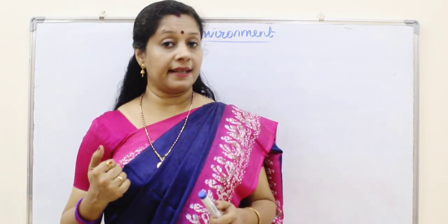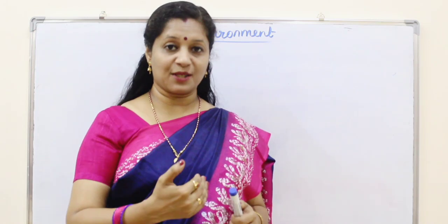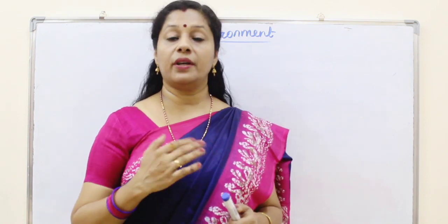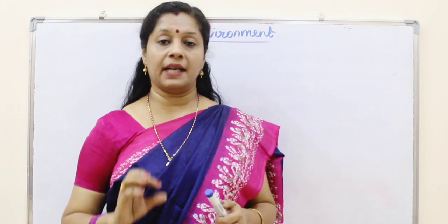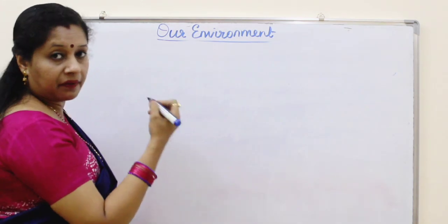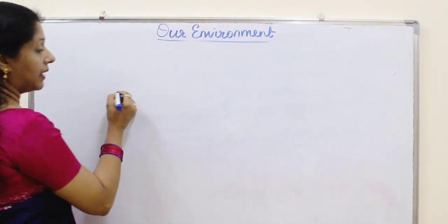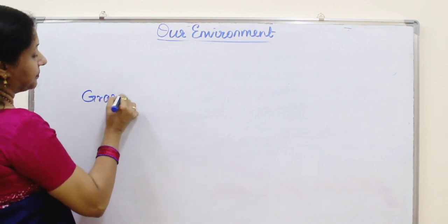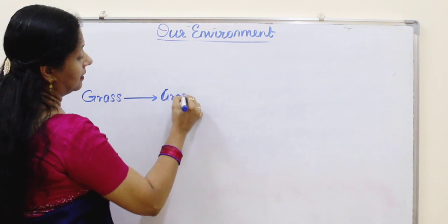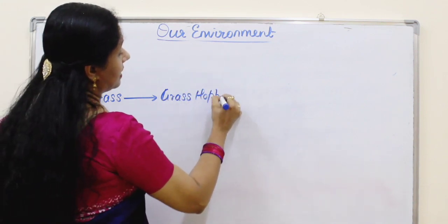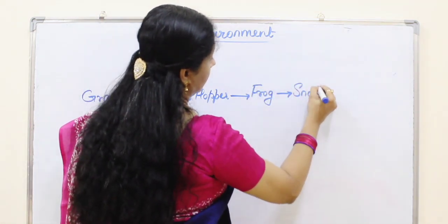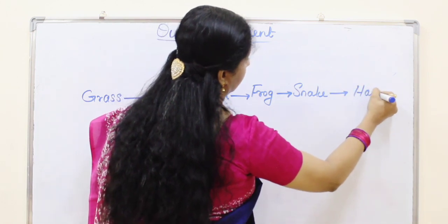In a grassland ecosystem: grass is eaten by a grasshopper, the grasshopper is eaten by a frog, the frog is eaten by a snake, and the snake is eaten by a hawk. You should know at least one terrestrial and one aquatic food chain thoroughly.